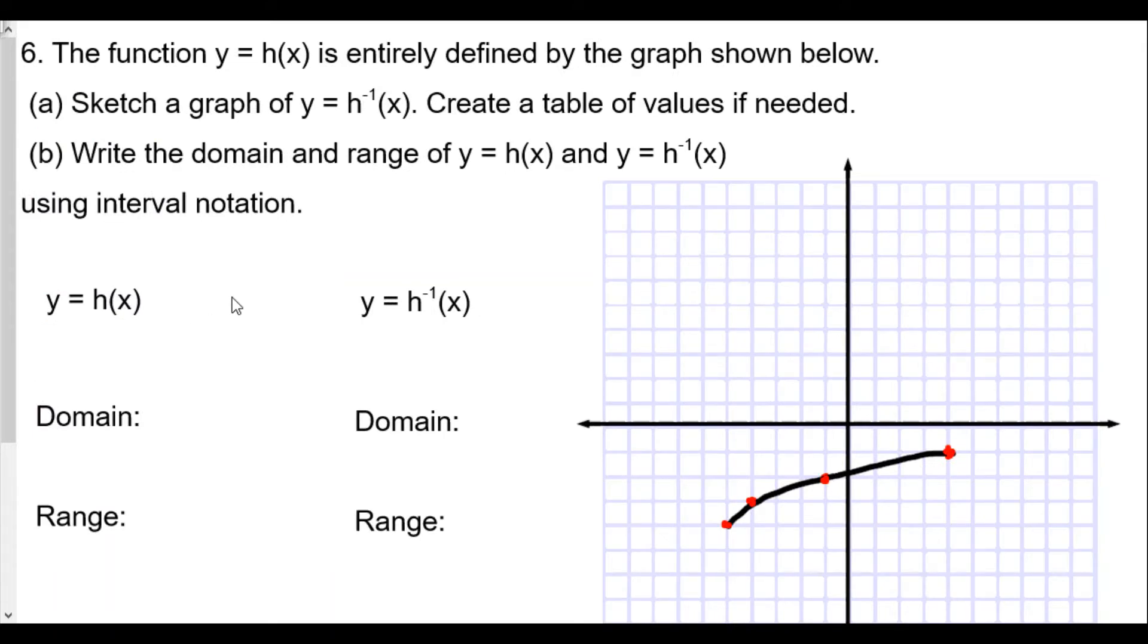Here, y = h(x) is how we define the graph shown below. Sketch a graph of the inverse and create a table of values if needed. So let's make a table then. Here we have our table of values for h(x). We have x and y. x is equal to negative 5 and the y value is negative 4. x value is negative 4, y value is negative 3. x value is negative 1, y value is negative 2. And the x value is 4, y value is negative 1.